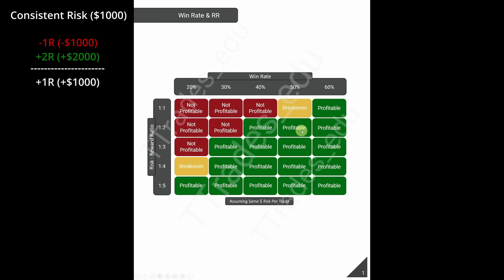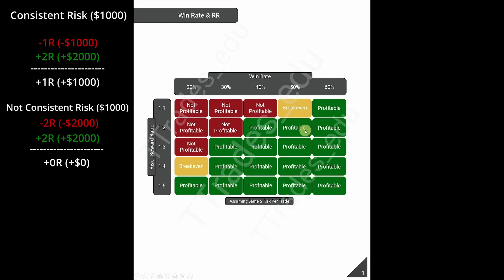Now let's say I was using the same fixed 1:2 R system with a 50% win rate, however I was not keeping consistent position sizing. On the first trade instead of risking $1,000 I risked $2,000. After taking that loss I'm now down 2R or $2,000. On the next trade when I'm risking $1,000 and hit a 2R trade, instead of being up 1R I'm at break even. You can see how this table only works out with consistent position sizing.